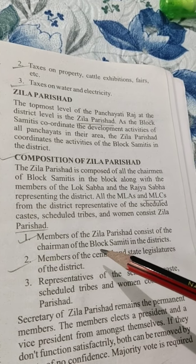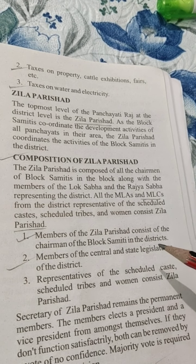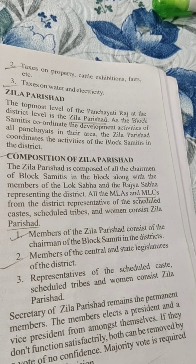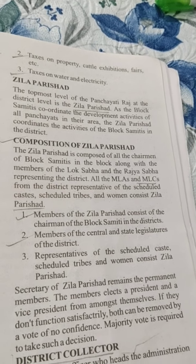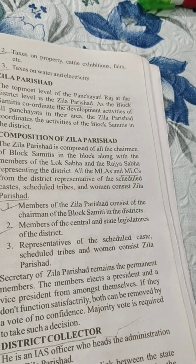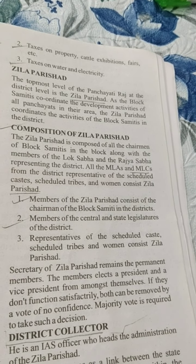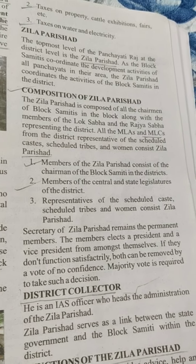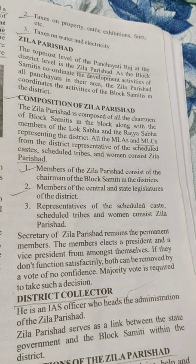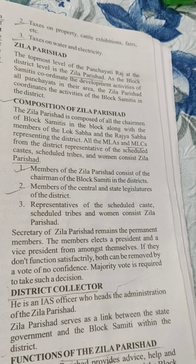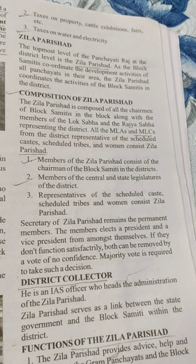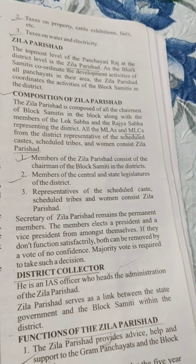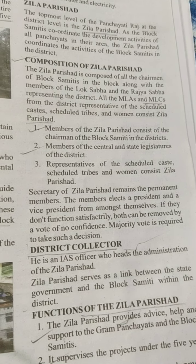There are three points regarding Jilla Parishad membership: 1. Members consist of the chairmen of the Block Samitis in the districts. 2. Members of the central and state legislatures of the district. 3. Representatives of the Scheduled Castes, Scheduled Tribes and women. The Secretary of the Jilla Parishad remains a permanent member. The members elect a President and a Vice President from amongst themselves; both can be removed by a vote of no confidence, for which a majority vote is required.